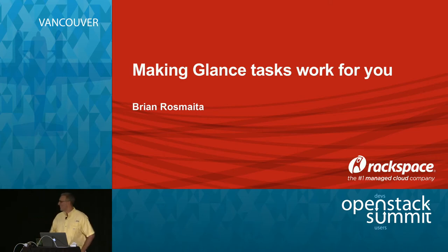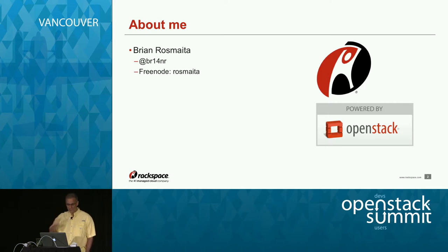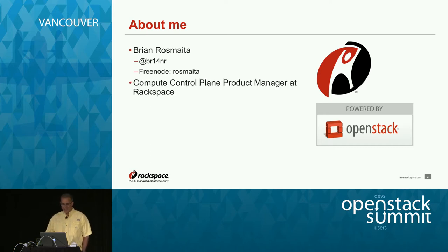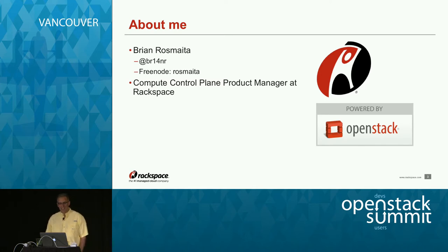This talk is about making Glance tasks work for you. A little about me: my name is Brian Ross, my Twitter handle is Ross Meta, and on Freenode I'm just Ross Meta. I'm the Compute Control Plane Product Manager at Rackspace, which means I work with the Nova and Glance APIs as they impact users and other products that use those APIs.